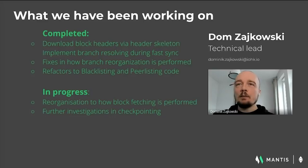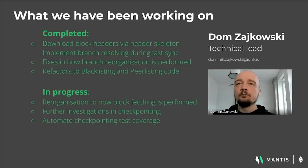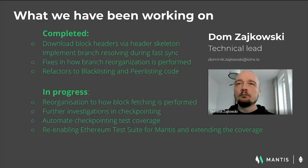We are continuing to work on stabilization of checkpoints. A lot of effort has been put into bringing fixes from different investigations into the development branch, and our current focus is investigation of the reorganization mechanism. We also continue to work on a suite of automatic tests to show that checkpointing and the client in general is behaving as expected. We are also adding ETS coverage, focusing on adding missing endpoints to Mantis and setting up a CI job. Improvements in FastSync led to the discovery of unexpected behavior in peer management, which we are looking into.